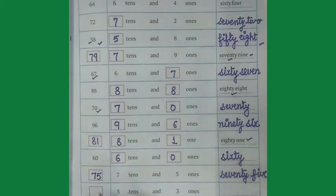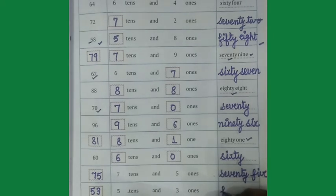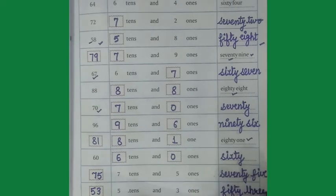Come on next one, 5 tens and 3 ones, we can write it 5 tens, 3 ones, 53. Along with we will write the number name, F-I-F-T-Y-50, T-H-R-E-E-3.